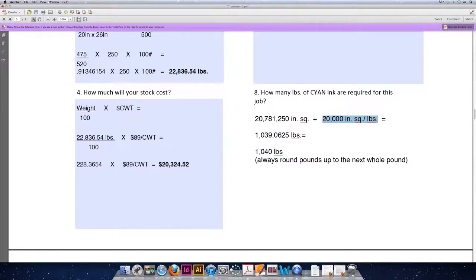So 20,781,250 square inches of coverage area needed for cyan, divided by 20,000 square inches for every one pound of cyan ink means we need to purchase exactly 1039.0625 pounds. We don't purchase part of a pound, we have to buy at least a whole pound to buy the container, so we'll actually purchase 1040 pounds.